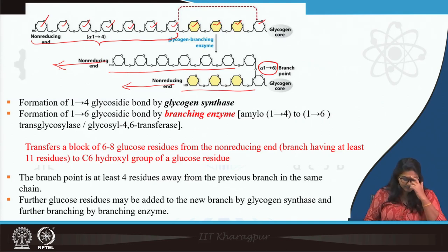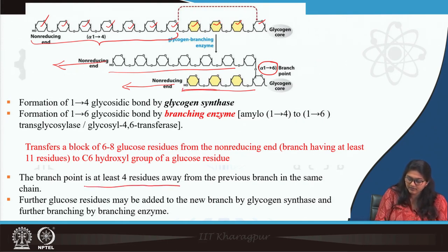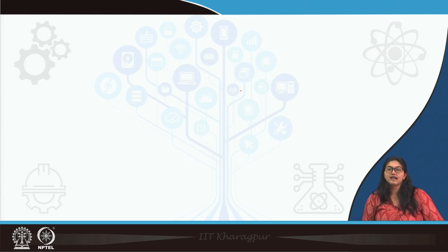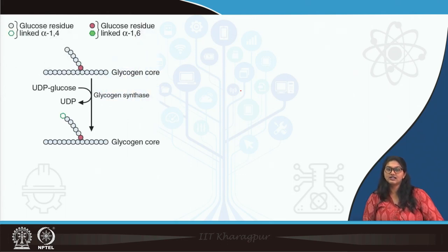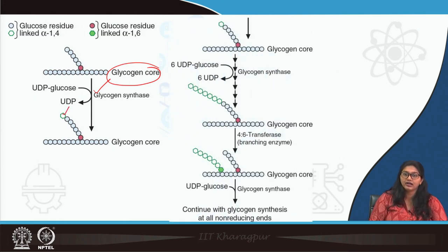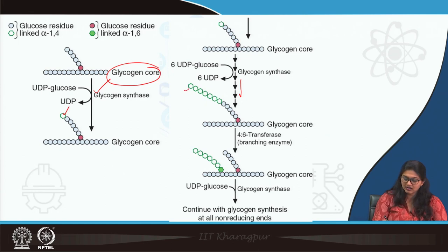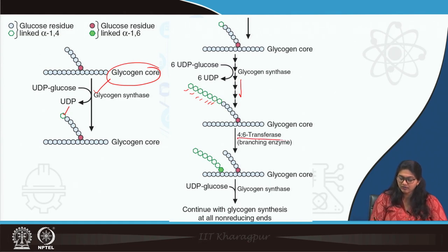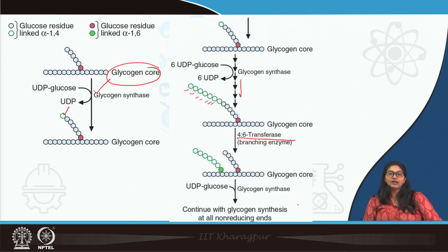One important point: as discussed, there should also be at least 4 residues remaining before formation of an alpha 1,6 bond. This is how glycogen is synthesized inside our body. You can see the glycogen core with addition of glucose forming alpha 1,4 glycosidic bonds via glycogen synthase; then the chains are extended with addition of glucose; then there is formation of branching with the branching enzyme; and finally there is an extensively branched molecule formed. So this is all about glycogen synthesis.